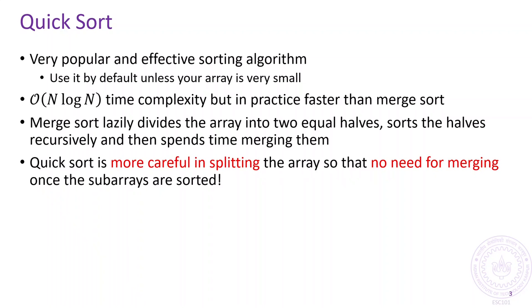Quicksort also splits the array into two and recursively sorts the smaller arrays. However, quicksort is much more careful about splitting the array so that once the two smaller arrays are sorted, there is actually no need to merge at all. This is the secret source behind quicksort and it is based on a cool trick known as partitioning.